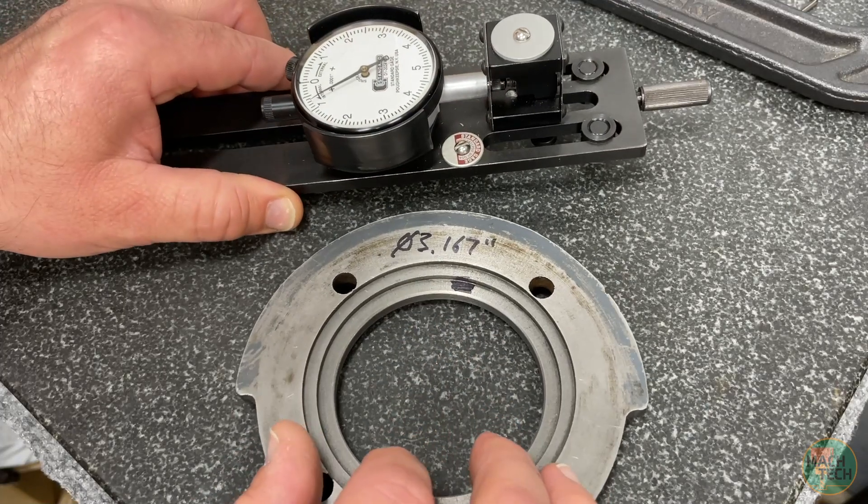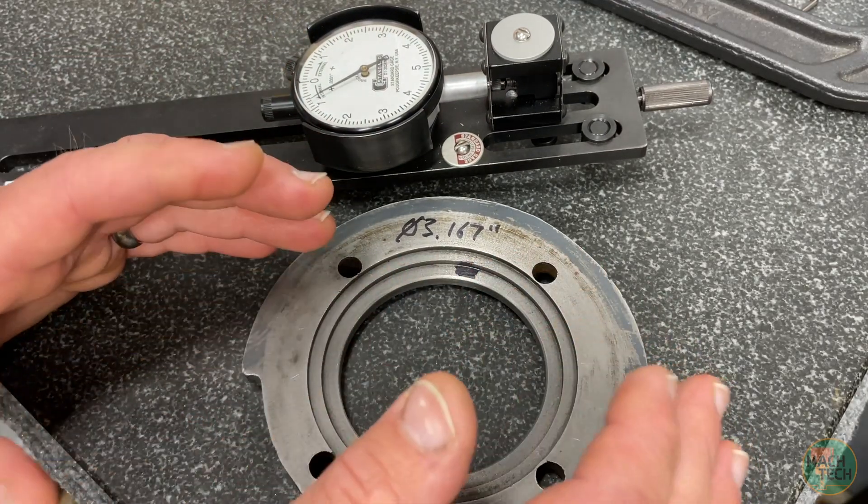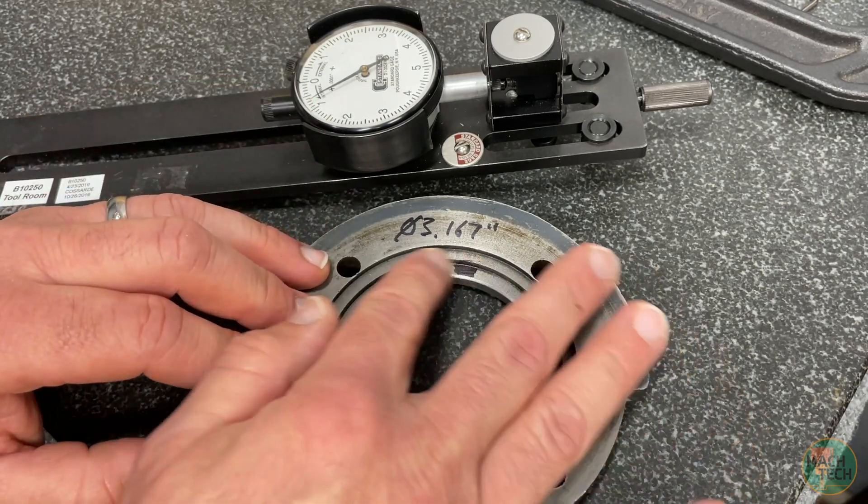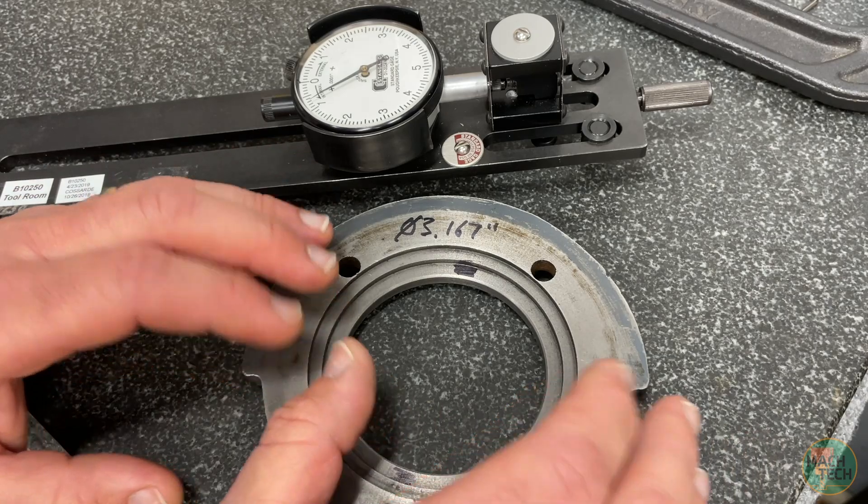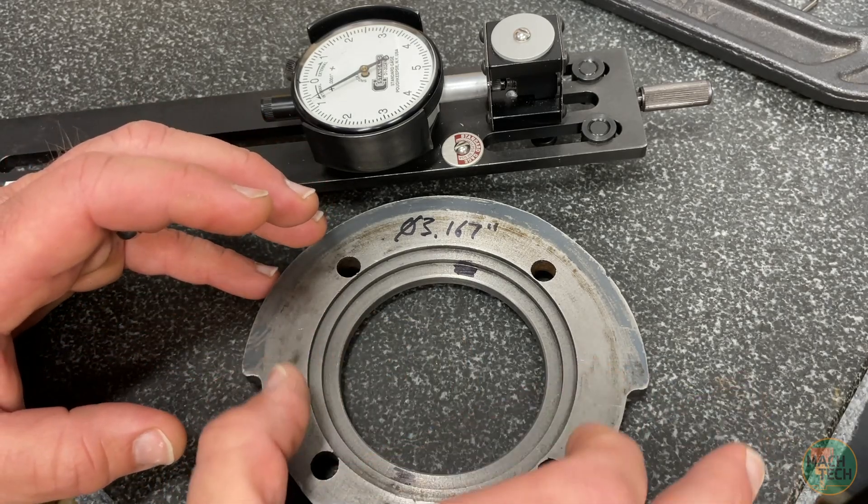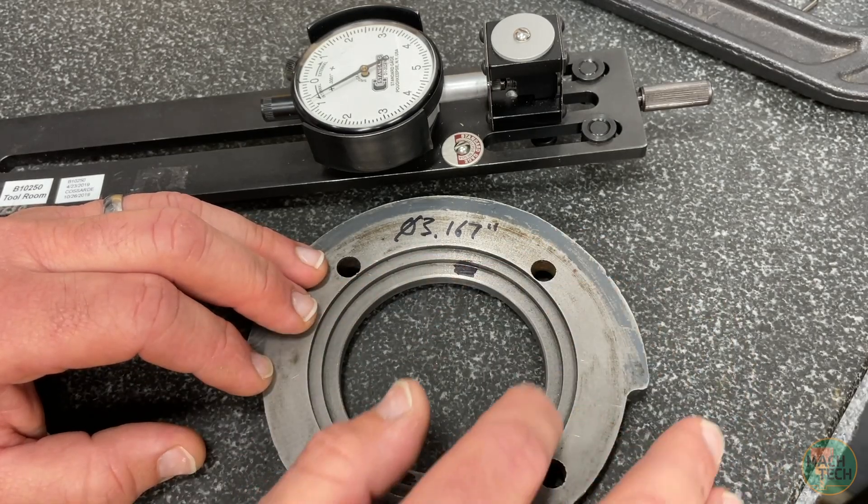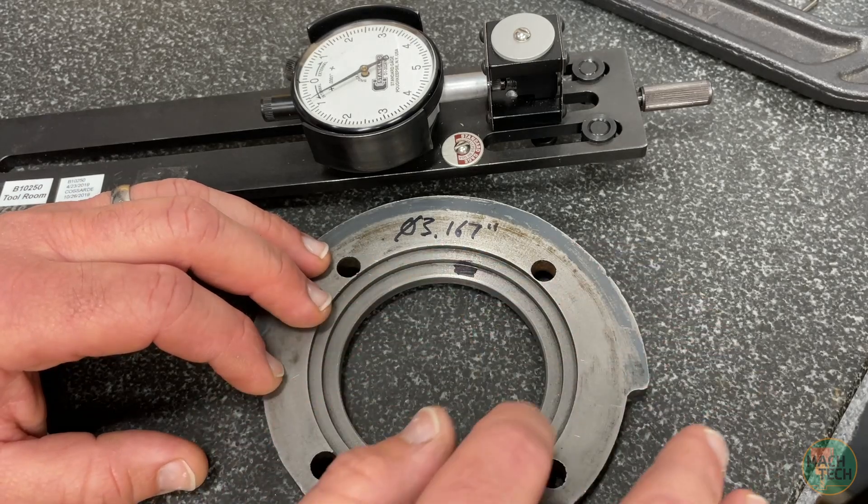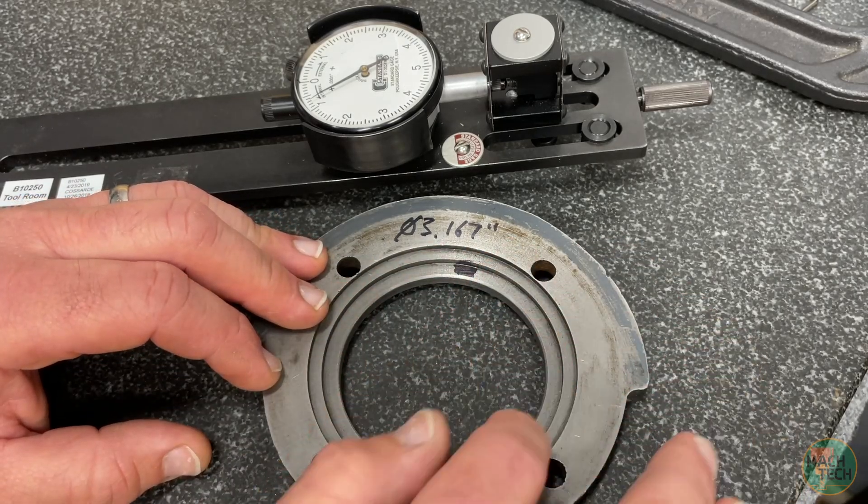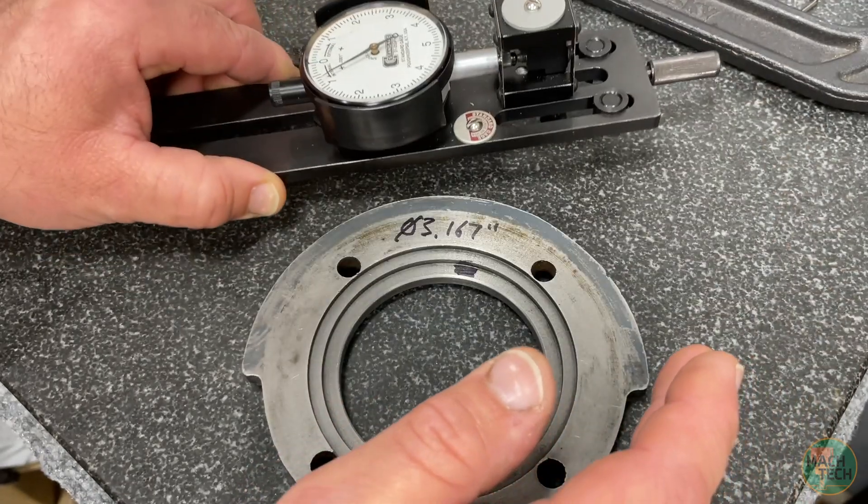Anyway, there you go. So a simple and effective means by which you can check the size of shallow diameters, both internal diameters like we have here and external diameters. So whatever part mates to this is going to have some protruding external diameter from a flange face. And that is going to be a relatively tight register fit to this. And so you can use this tool to check that as well.